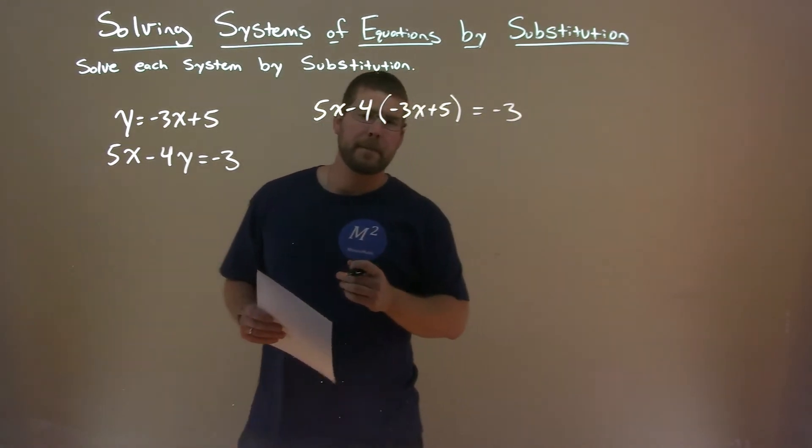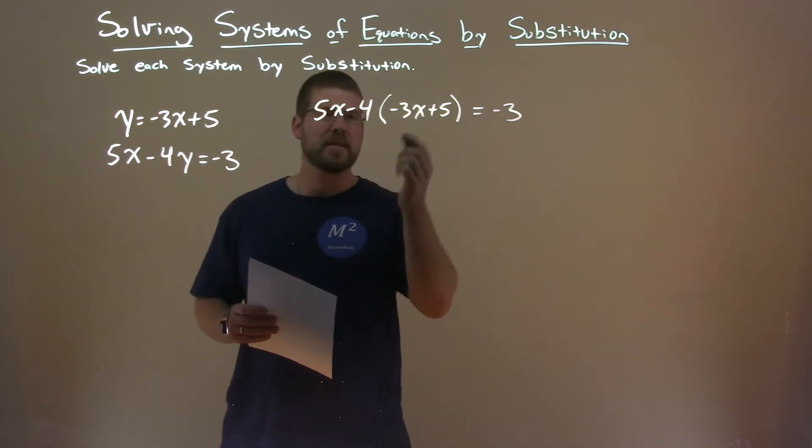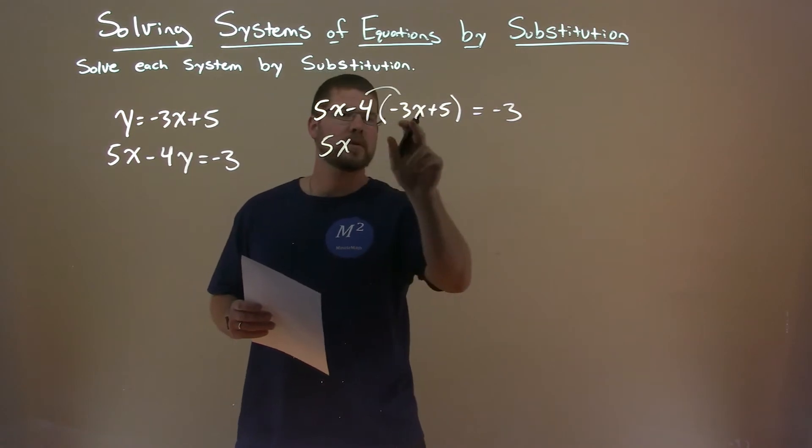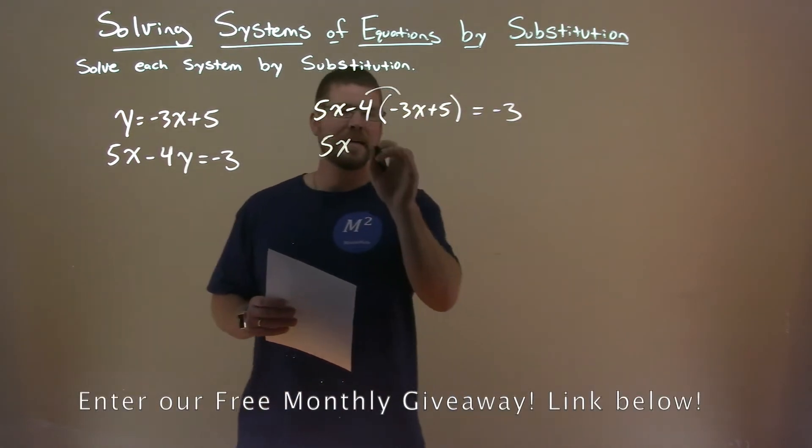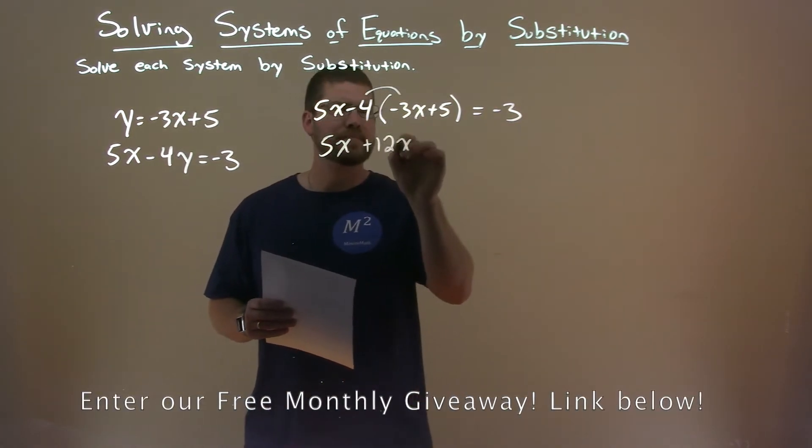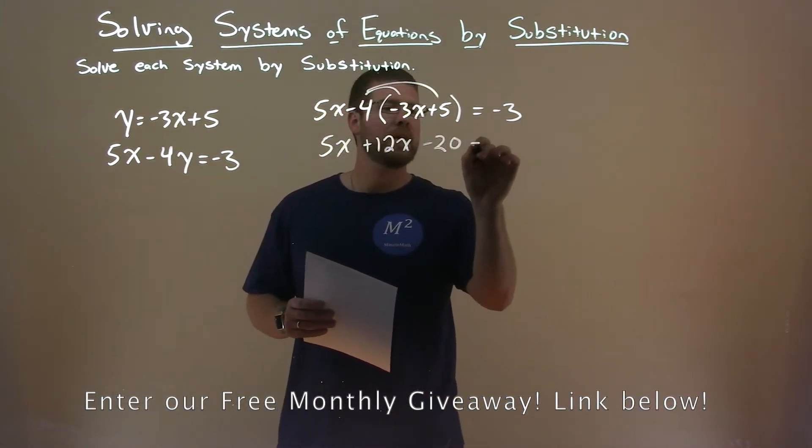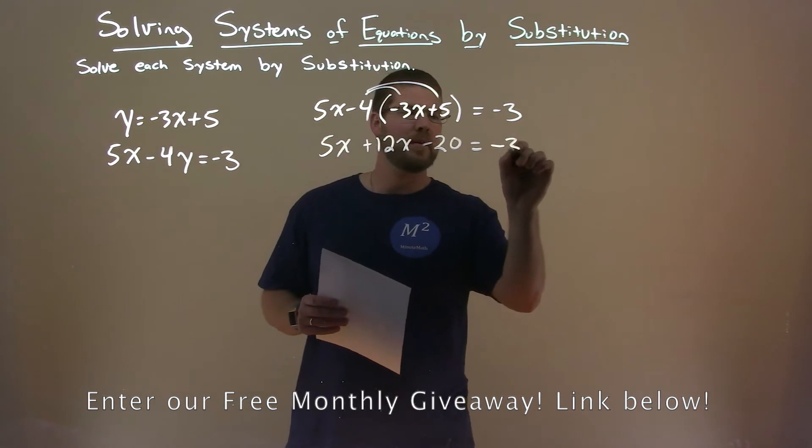From there, we want to simplify this and get x by itself. So 5x comes down, distribute the minus 4. Minus 4 times minus 3x is a positive 12x. Minus 4 times a positive 5 is a minus 20, and we have negative 3 left over there.